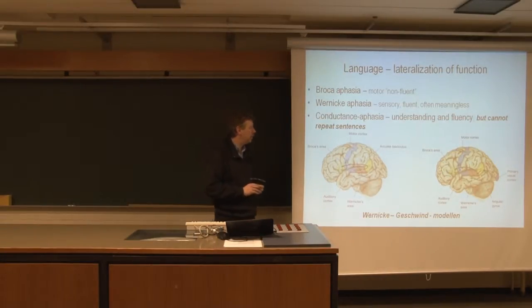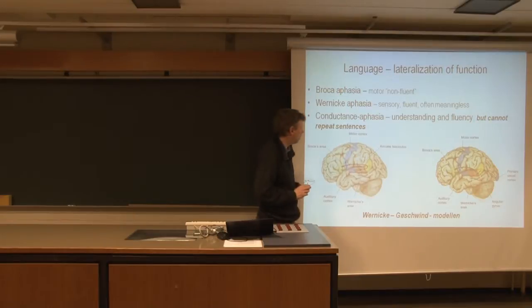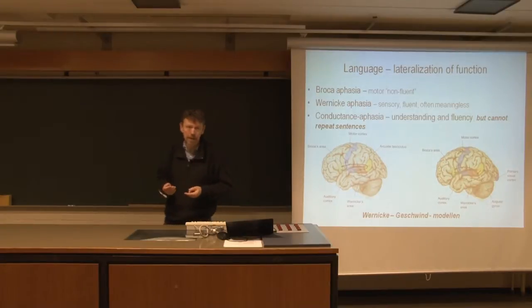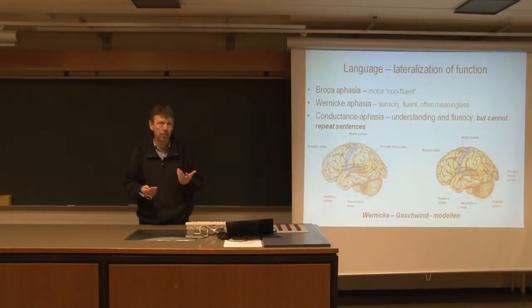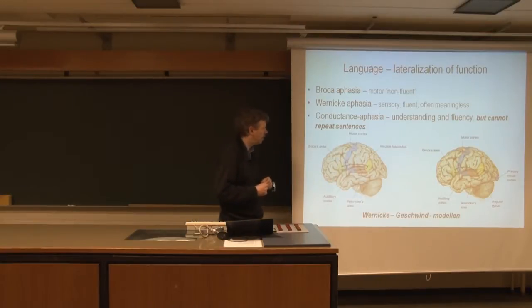So language localization. In most of us, language ends up being localized in the left part of our brain. It's about 90 percent of us who will have the language area located in the left part of the brain, which coincides nicely with the fact that most of us also use the right hand as the dominant hand.